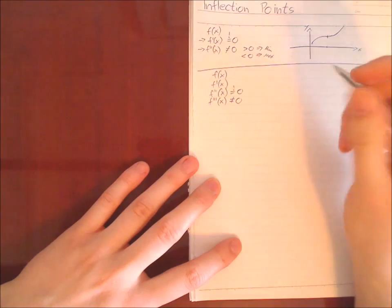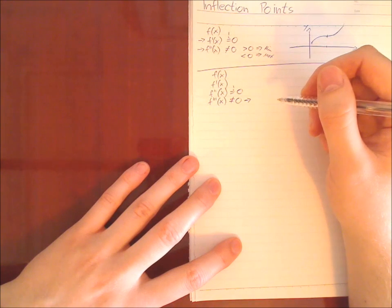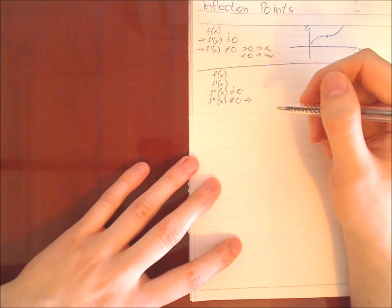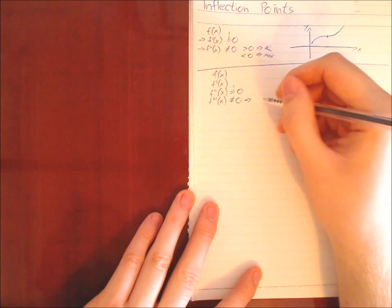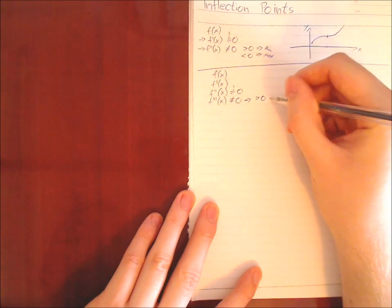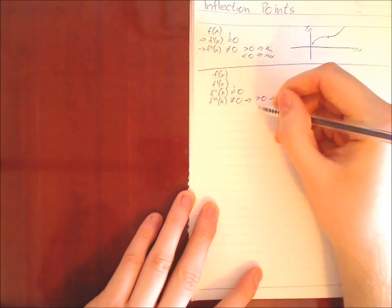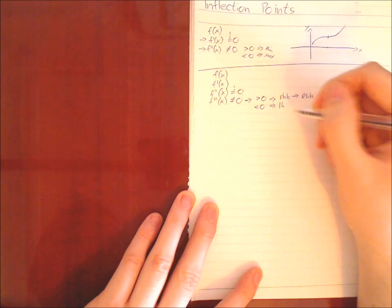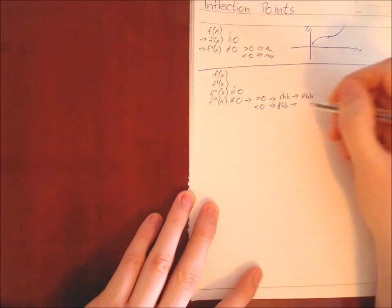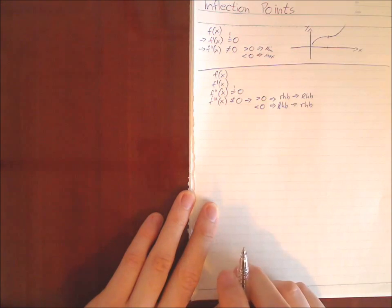It used to be that the second derivative is not zero; now the third derivative is not zero. The third derivative tells us whether before the point we have a right-hand bend and afterwards a left-hand bend, or the other way around. If the third derivative is greater than zero, we have a right-hand bend and then a left-hand bend. If it is smaller than zero, we have a left-hand bend and then a right-hand bend. So this is how it works — not very difficult if you already know how to calculate critical points.